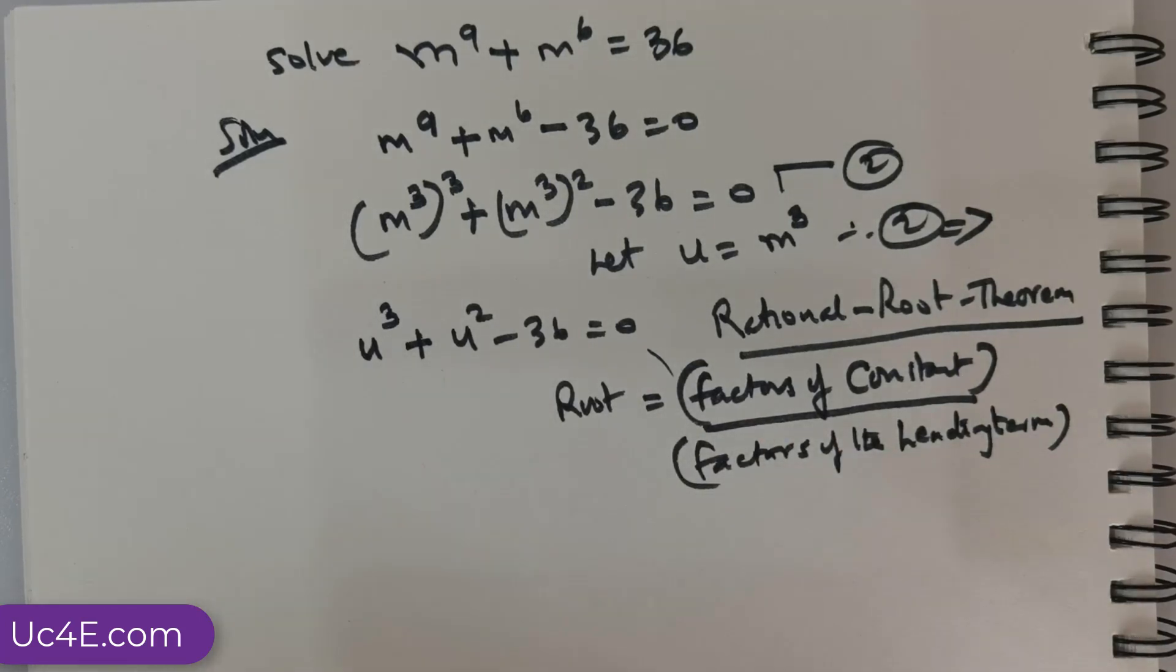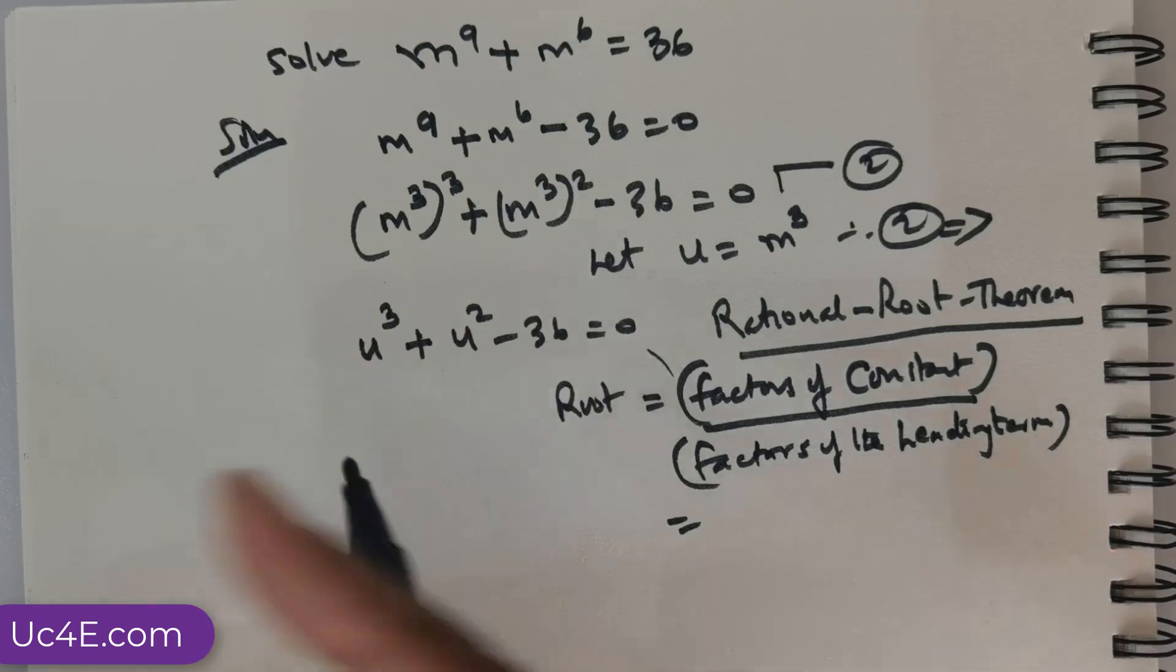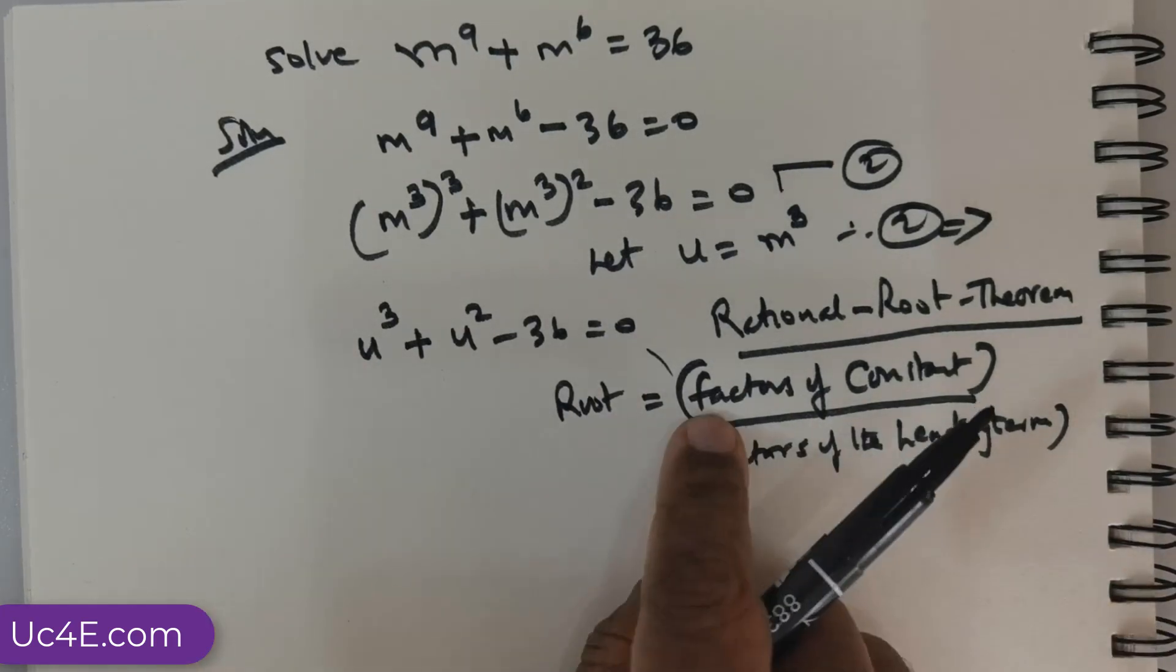Leading term. So, in this case, the leading term is going to be this. So, the coefficient of the leading term is 1. The factors of 1 is going to be 1 itself.